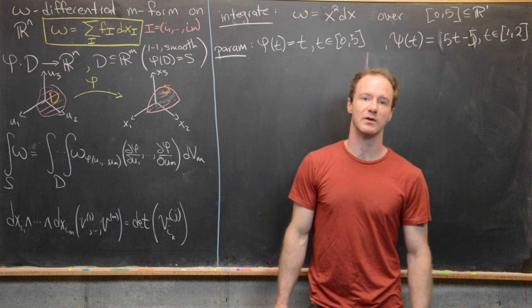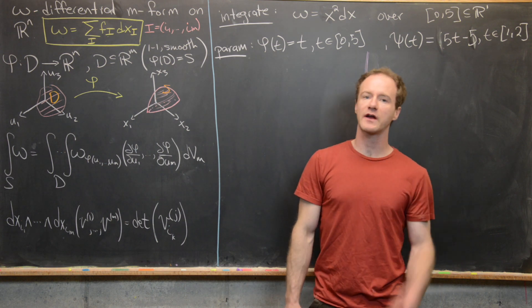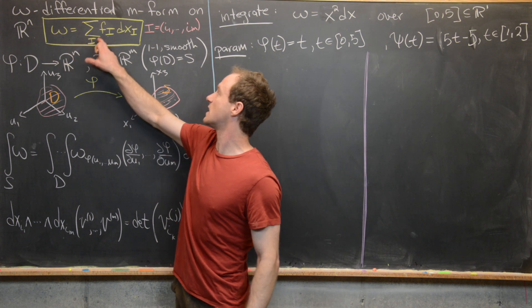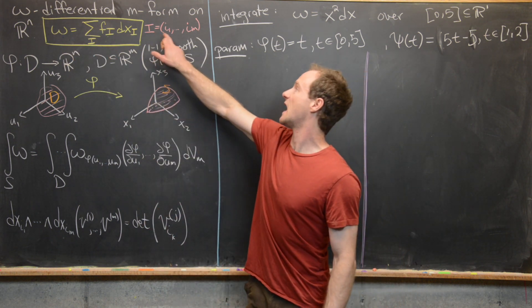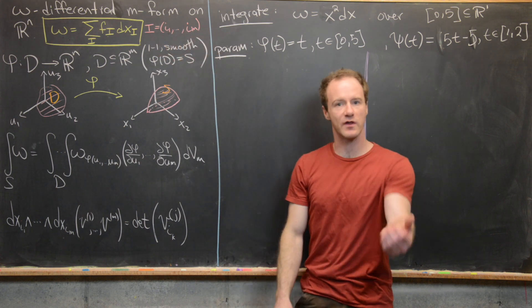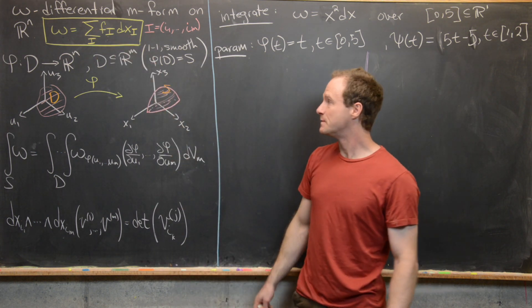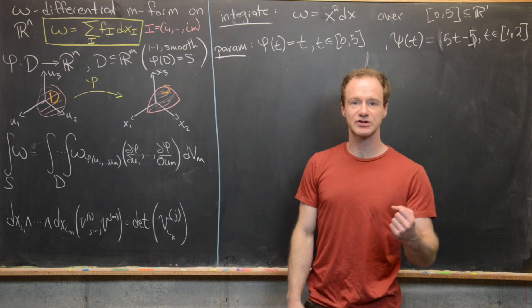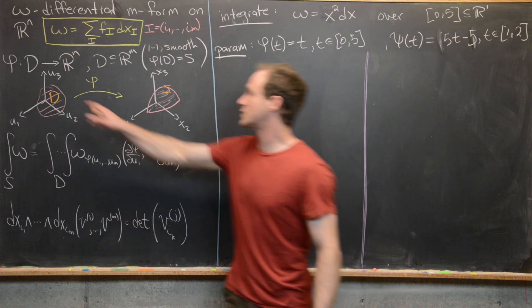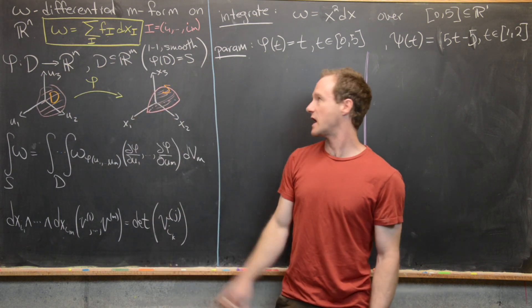So let's recall a couple of terms first. If we've got a differential m-form on Rn, we showed earlier that it could be written as omega equals the sum over the multi-index i — the tuple i1 to im, where that is strictly increasing — then we have f sub i, dx sub i. And phi is a parameterization of an m-dimensional hypersurface in Rn, going from D to Rn, where D is a subset of Rm.